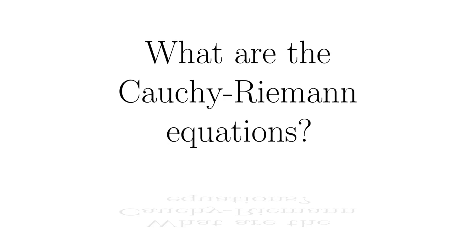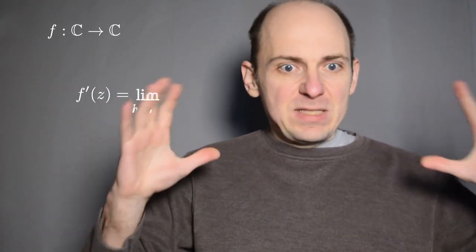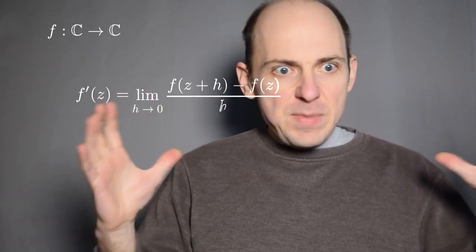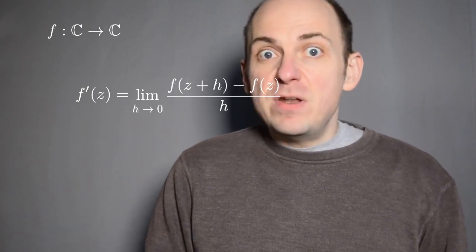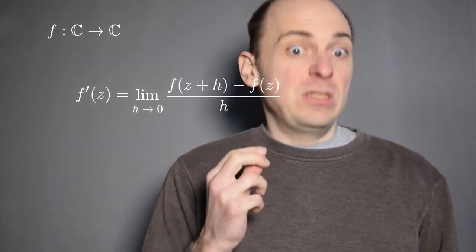What are the Cauchy-Riemann equations? I want to study a complex differentiable, a holomorphic function, and I want to see some of the consequences of that holomorphicity. So let's consider a function f from ℂ to ℂ, and I want that function to be complex differentiable, to be holomorphic. We have this limit of this difference quotient — that's the definition of the derivative of this function f.